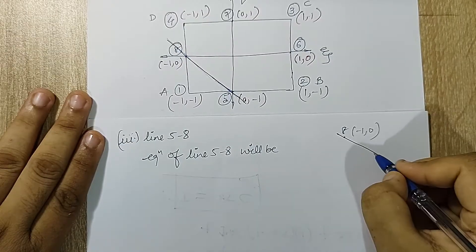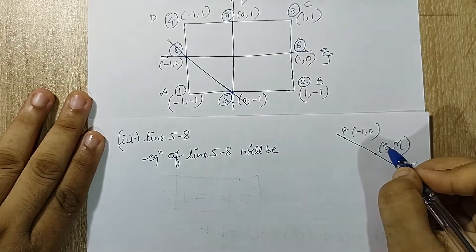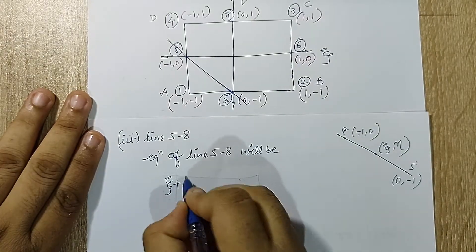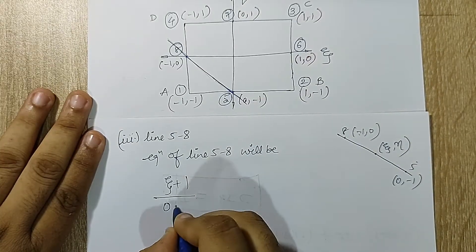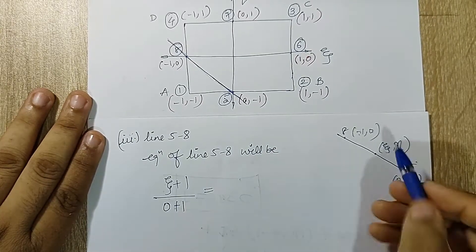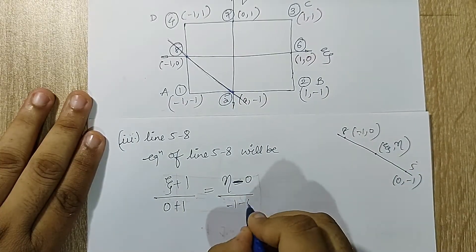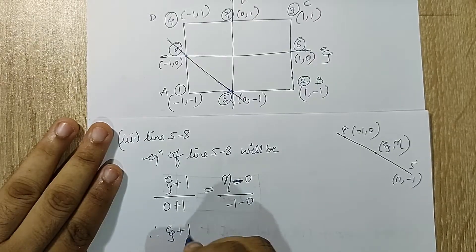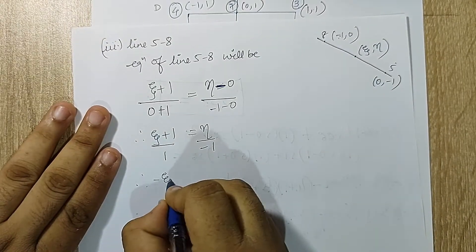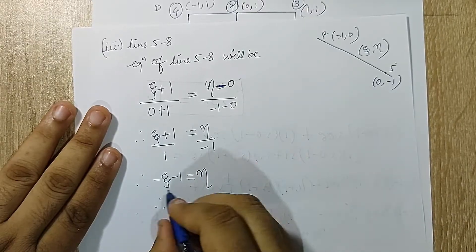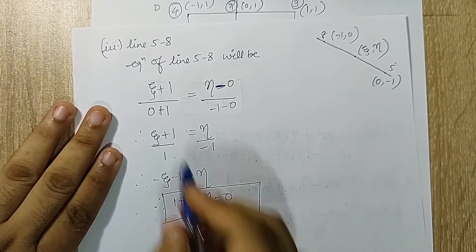I will write in terms of eta and zeta for a point between the two. Using the two-point form: (zeta + 1) / (0 + 1) = (eta - 0) / (-1 - 0). This gives zeta + 1 = -eta, and therefore 1 + zeta + eta = 0. So this is the equation of line 5-8. Now I have three equations of lines and can form the equation of phi_1.